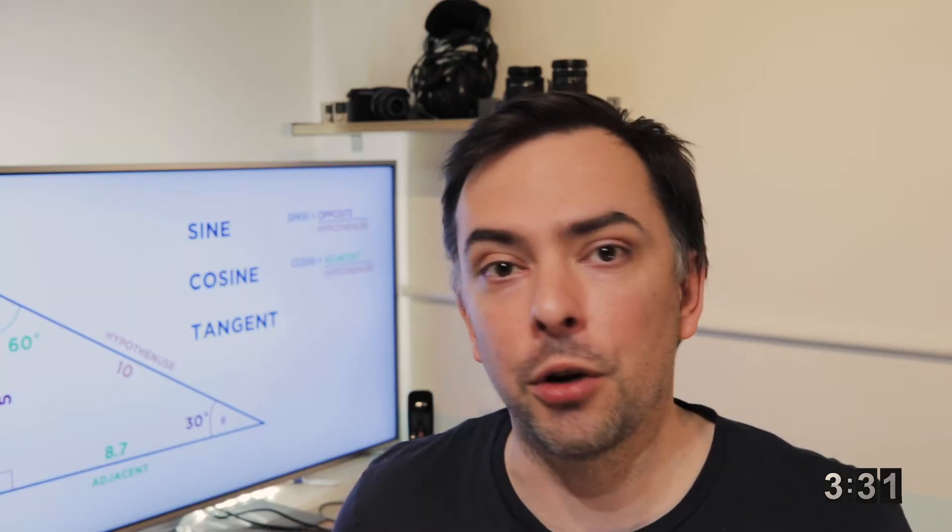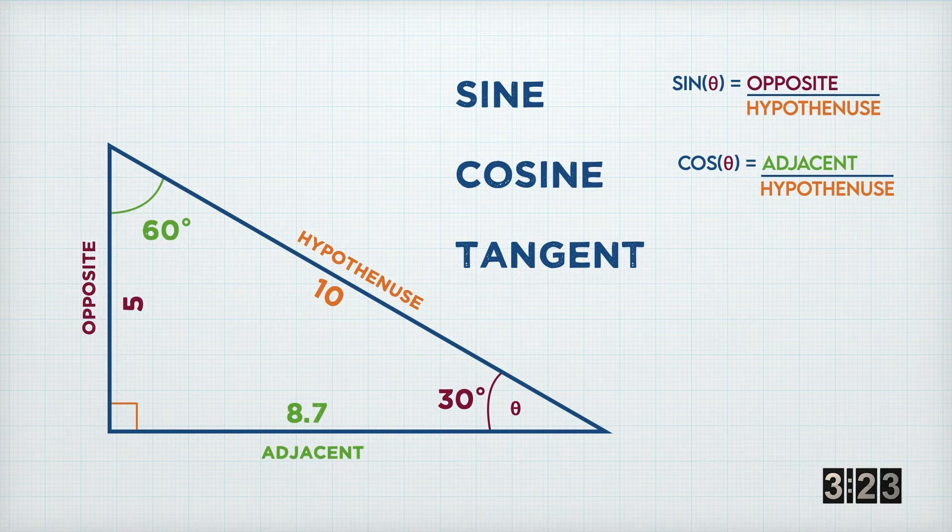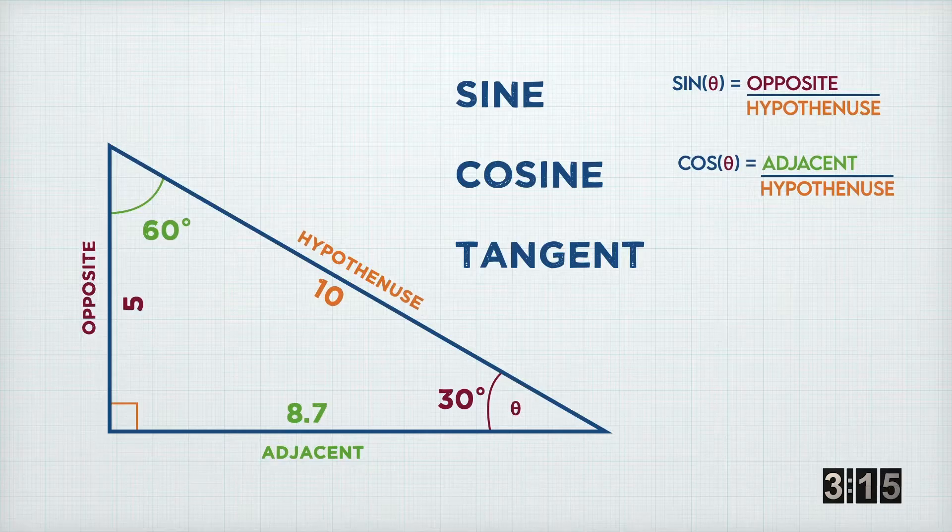The second function is cosine. Cosine says that the length of the adjacent side divided by the length of the hypotenuse is equal to the cosine of our angle. 8.7 divided by 10 is 0.87. If you do cos 30 on your calculator, you'll get 0.87.